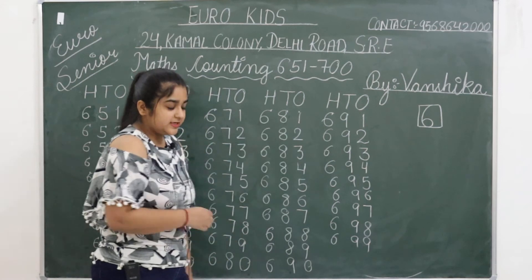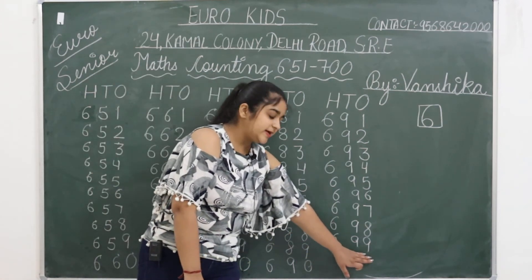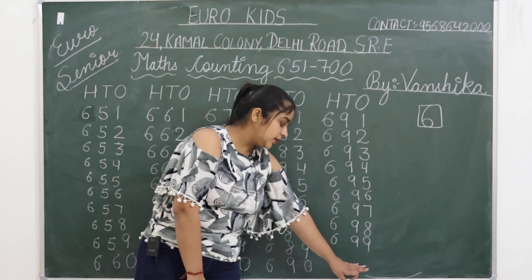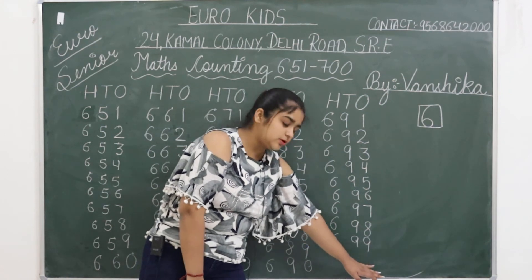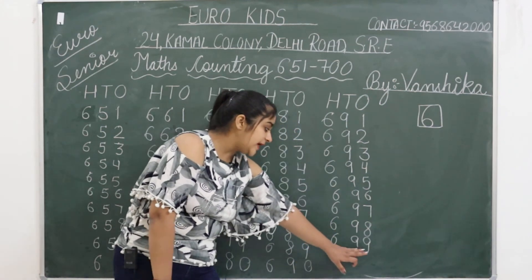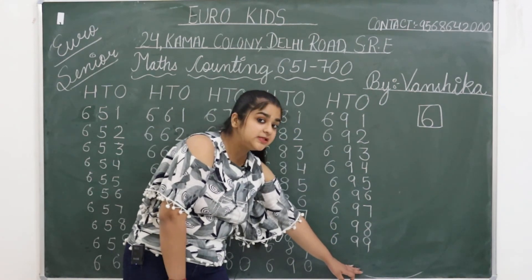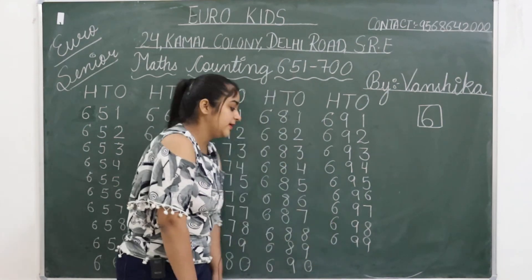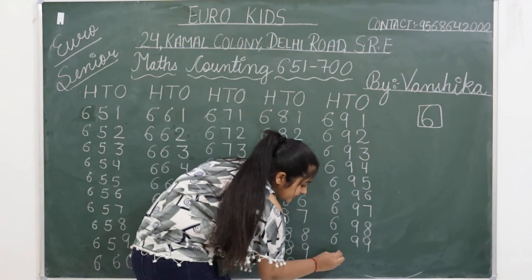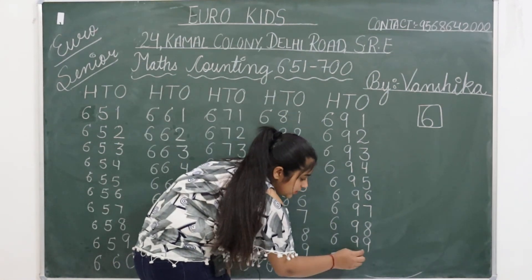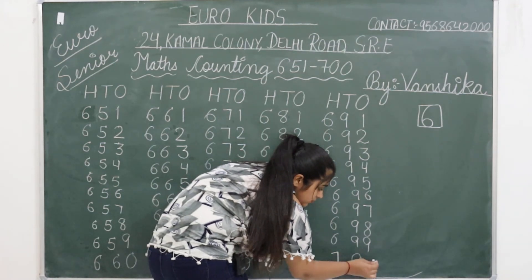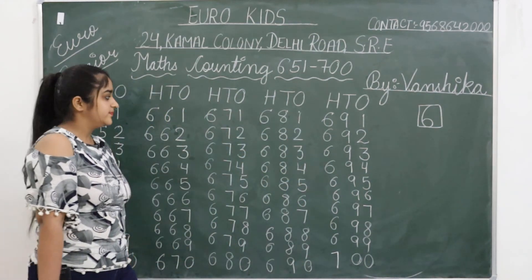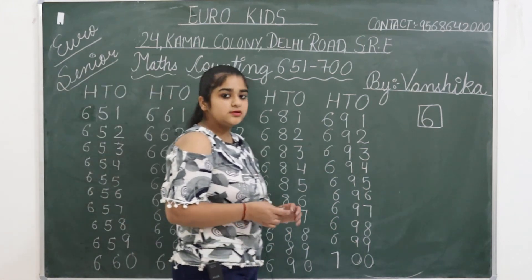After 99 comes what, children? We always write hundred next — so after 699, the 6 changes. After 6 comes 7, and after 99 comes zero zero. So 700 — seven hundred. Have you all understood?